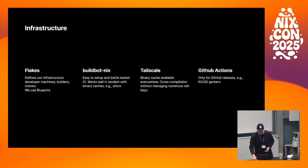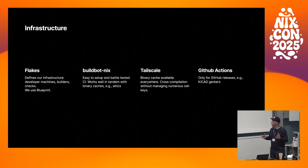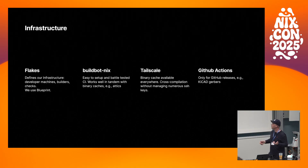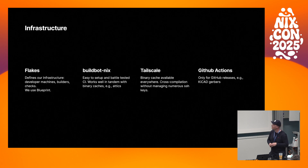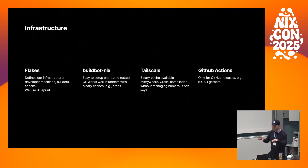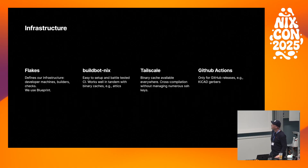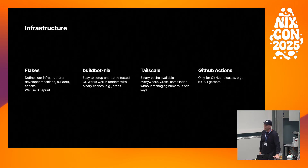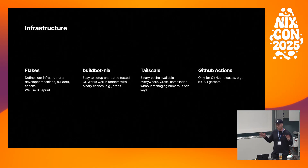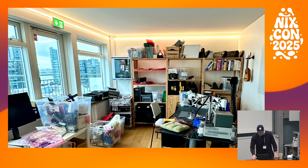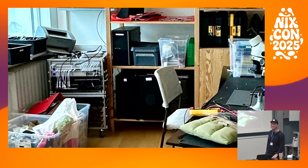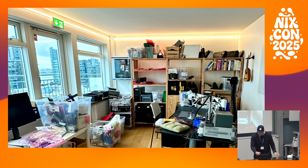For infrastructure we use flakes to define basically everything — all development machines, builders, and checks. We happen to use Blueprint because it's like flakes with crayons, very easy. Buildbot-Nix for CI: we have a master builder and then some builders for x86 and ARM64 for both Darwin and Linux. It works really well with a binary cache. We use Tailscale to manage networking and SSH keys between builders, and Gitea for things like KiCad Gerbers.